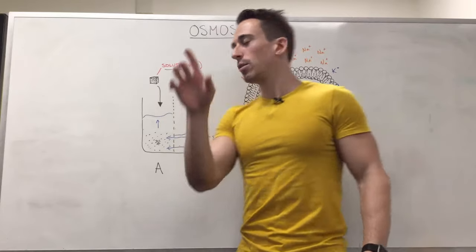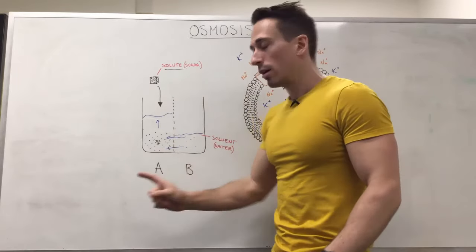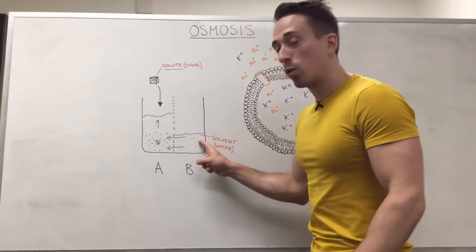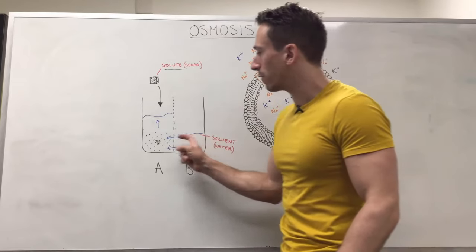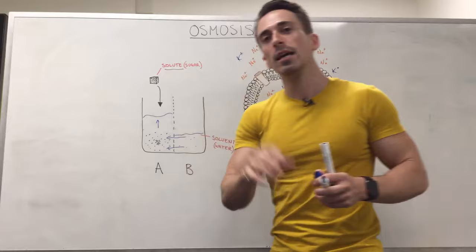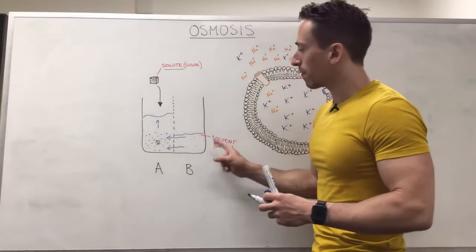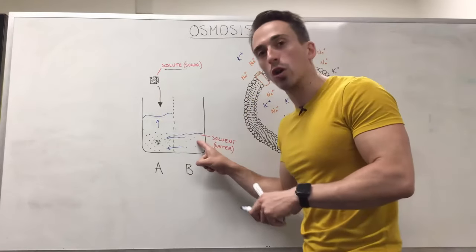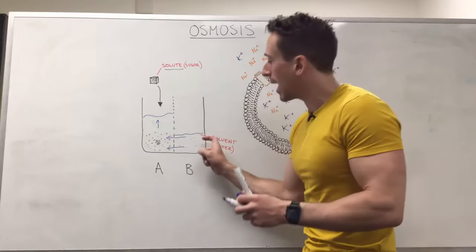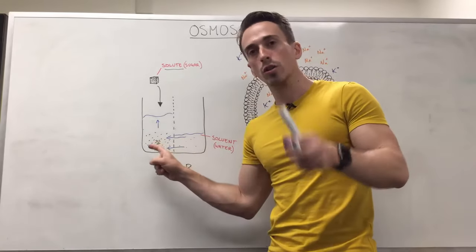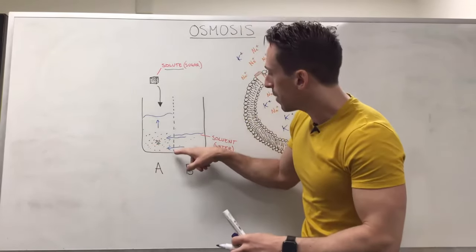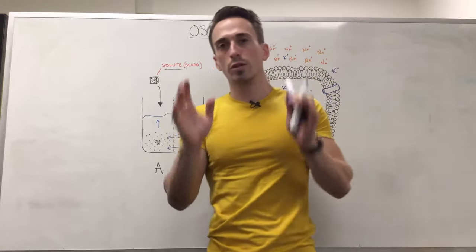This process in which water moved from an area of high water concentration to an area of low water concentration, or you could even say this movement of water from the area of low solute concentration through a semi-permeable membrane, is called osmosis.